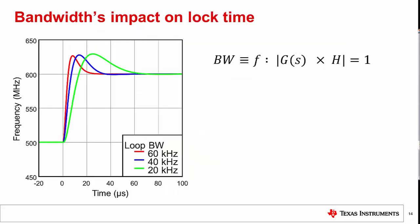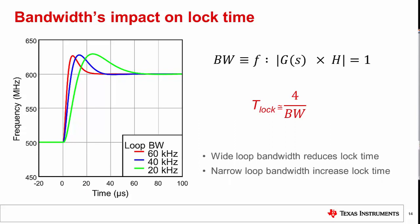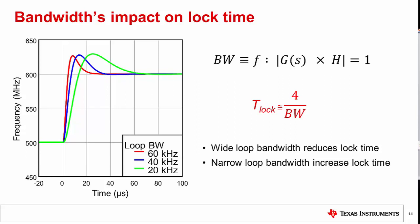In this graph, we see the effect of changing the loop bandwidth on the transient response of the PLL and more specifically on the lock time. As the bandwidth decreases from 60 kHz to 40 kHz and then to 20 kHz, you can see the time it takes the PLL to settle at the target frequency increase. Lock time is inversely proportional to loop bandwidth and can be estimated as 4 divided by loop bandwidth. For example, if the loop bandwidth is 1 kHz, then the lock time is approximately equal to 4 ms. Lock time can be fast or slow depending upon the PLL loop bandwidth. In general, a wider loop bandwidth reduces the lock time while a narrow loop bandwidth increases the lock time.